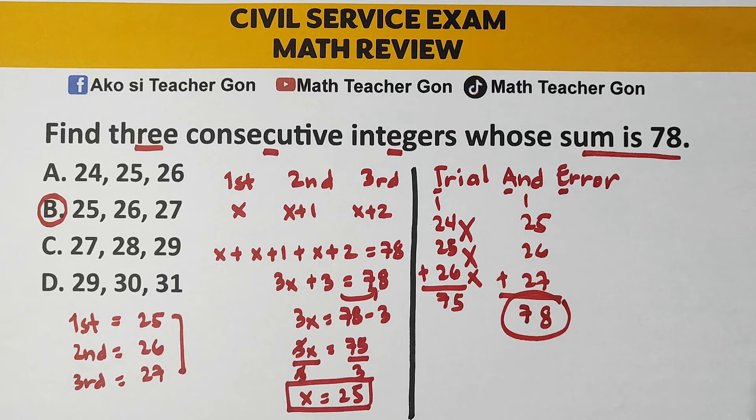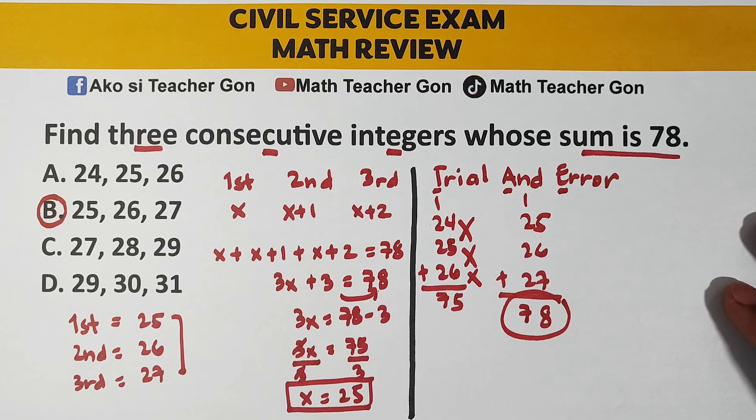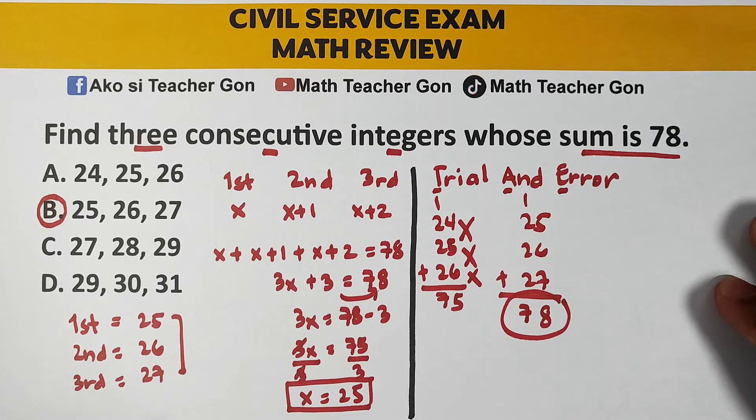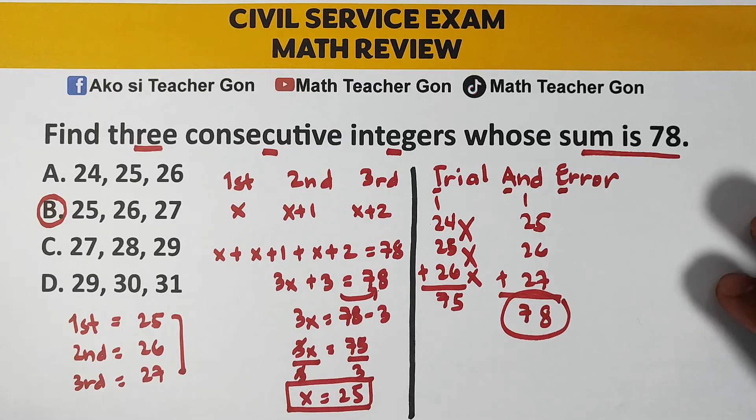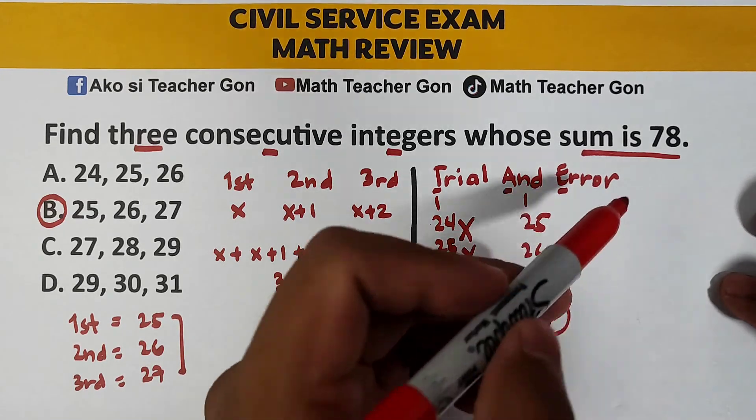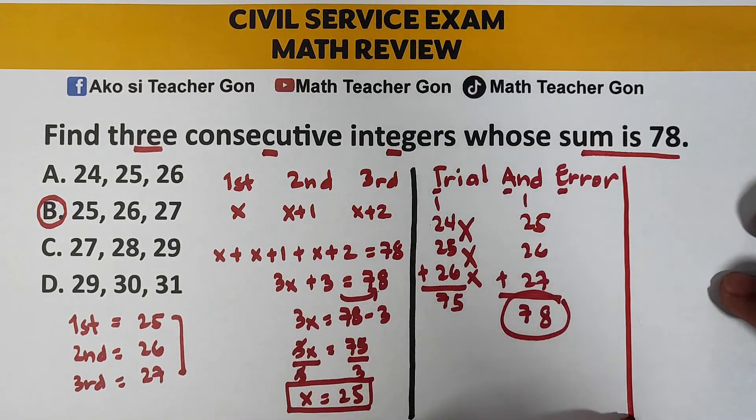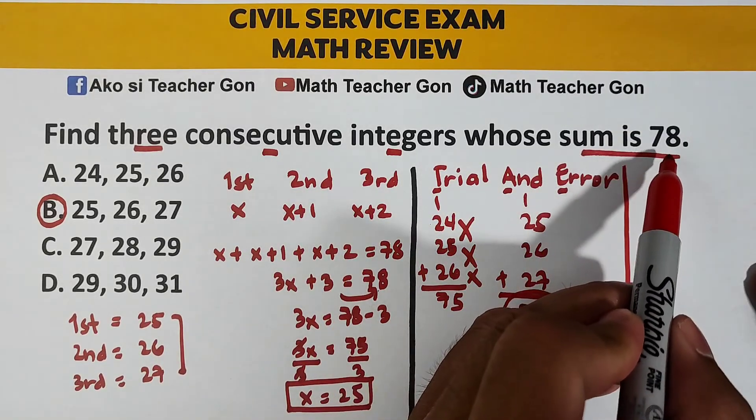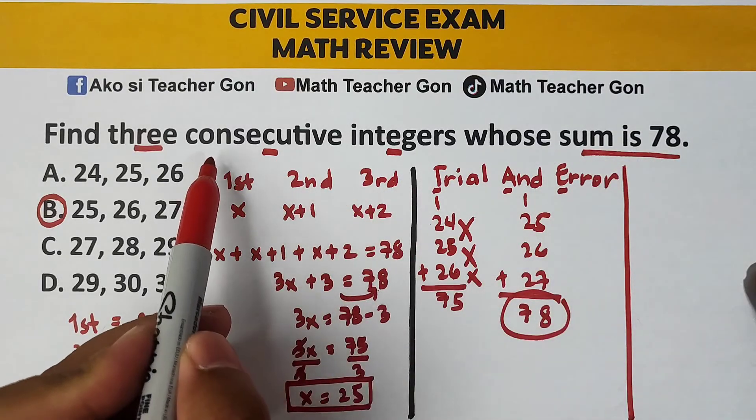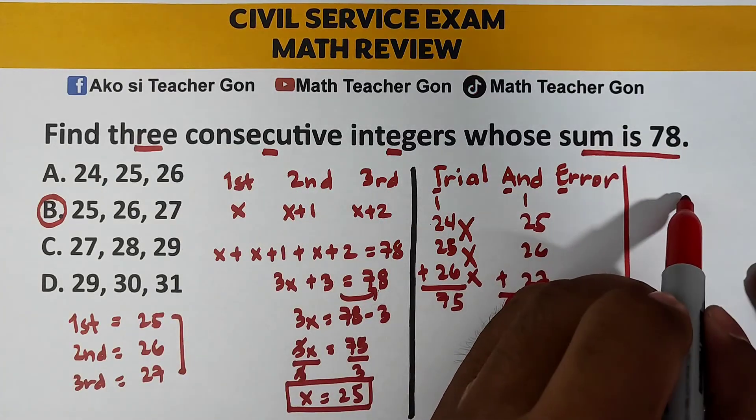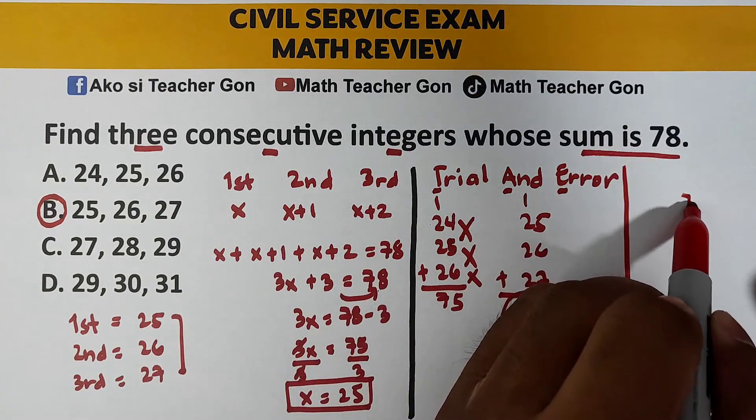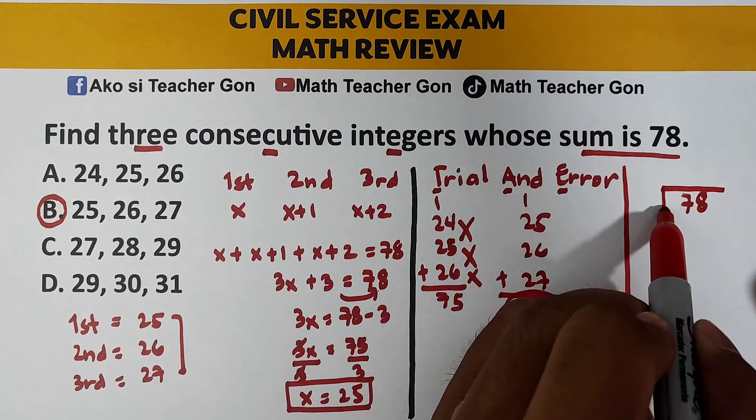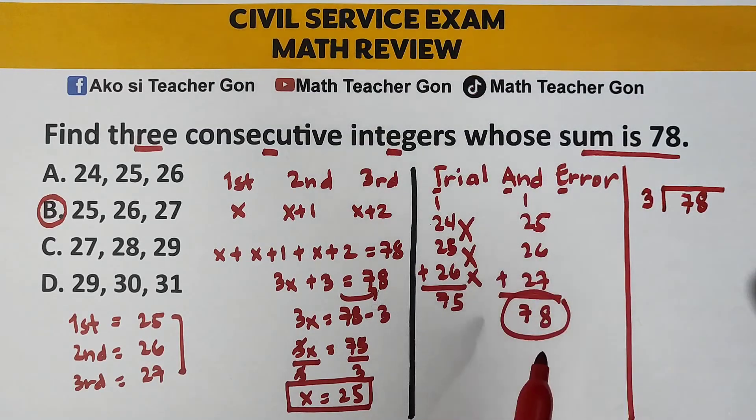Yun yung ating second method. So, yung trial and error, medyo maganda siya kung yung sagot ay nasa unahan. What about the other method na pwede nyo ibigay? Yung third. Third method, ang sum is 78, tapos 3 consecutive integers. Ang gawin mo muna, divide 78 by 3. Try natin.